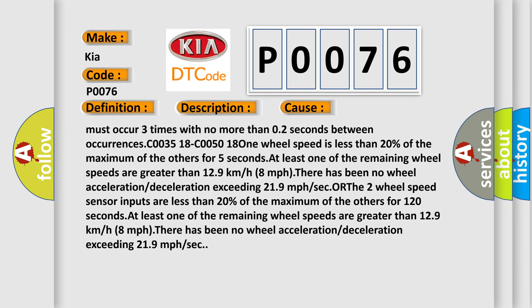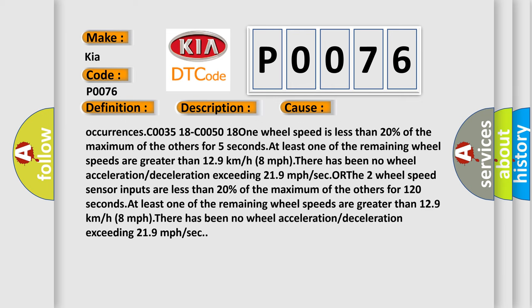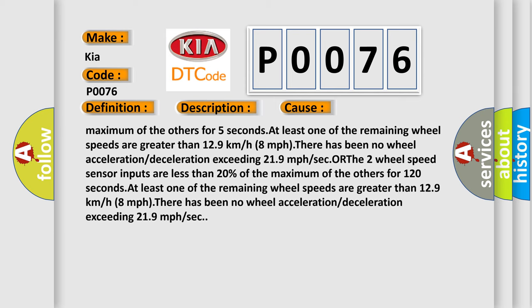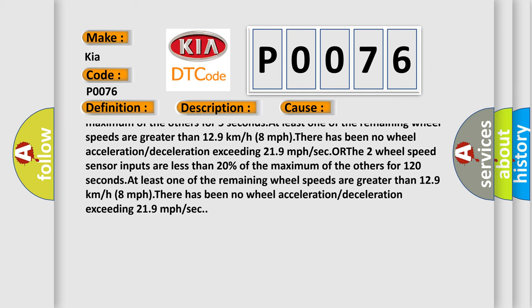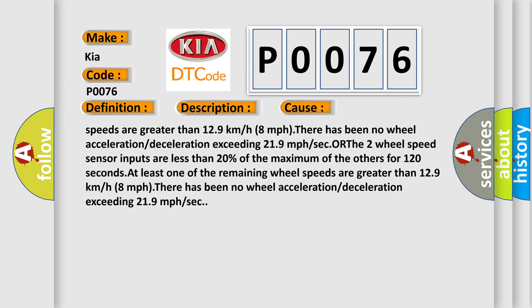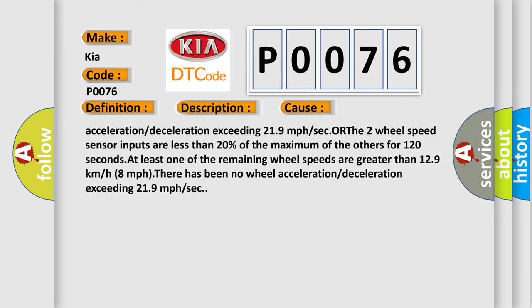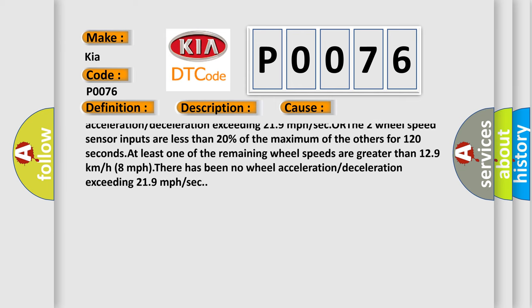C0035 18-C0050 18: one wheel speed is less than 20% of the maximum of the others for five seconds. At least one of the remaining wheel speeds are greater than 12.9 kilometers per hour (8 MPH). There has been no wheel acceleration or deceleration exceeding 21.9 miles per hour per second.